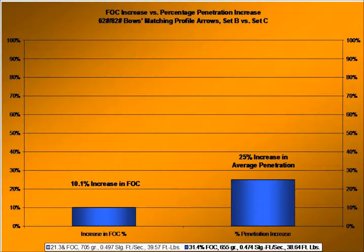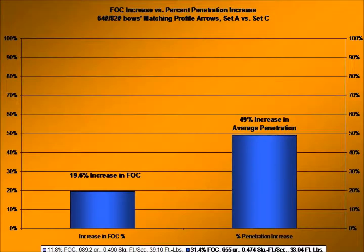The third comparison takes sets A and C — the normal FOC versus the ultra-EFOC: 11.8% and 31.4%. That's 689 grains for the normal FOC versus 655 grains for the ultra-EFOC — a 19.6% FOC increase and a 49% increase in penetration.